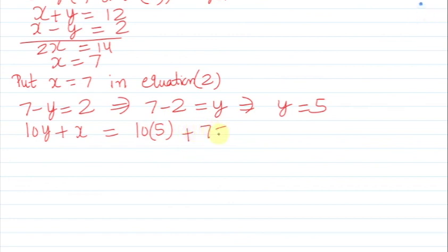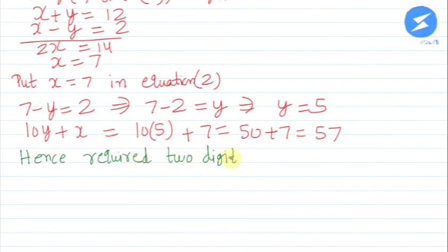Hence, the required two-digit number is 57. I hope you understood the solution well. Thank you.